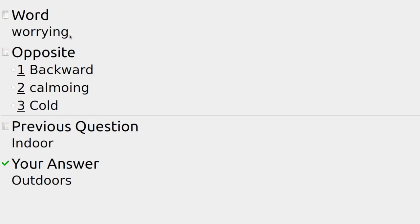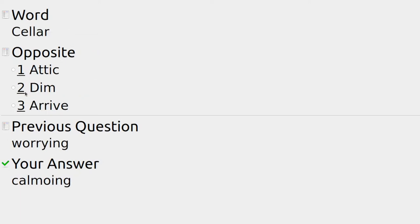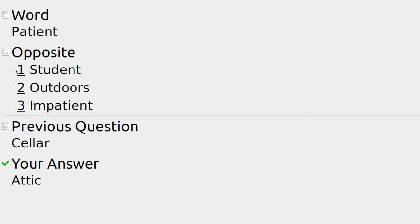Someone might be worrying about a particular item and something else might have a calming effect. At the bottom of the house is the cellar and the room at the top of the house is the attic.